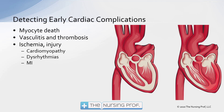In the heart, a lot of the same kind of stuff happens. We're going to have myocyte death — that's the heart muscle cells themselves. Vasculitis and thrombosis can occur, so we can have irritation to the inside of the vessels causing thrombi to occur, and then that can lead to ischemia and injury of the myocardium. Long-term complications include cardiomyopathies, dysrhythmias, and myocardial infarction as a result of this ischemia and injury from vasculitis and myocyte death.